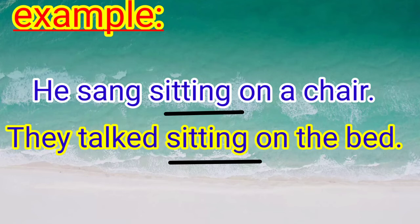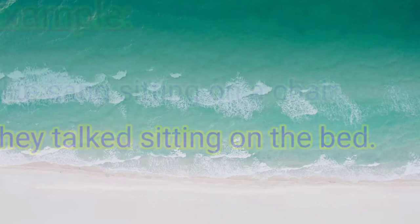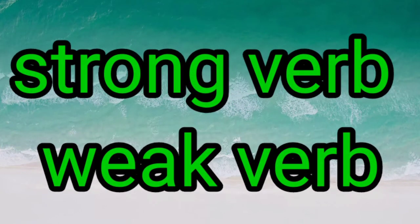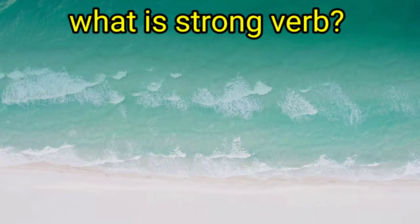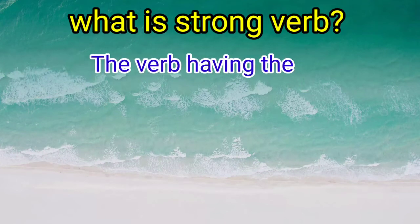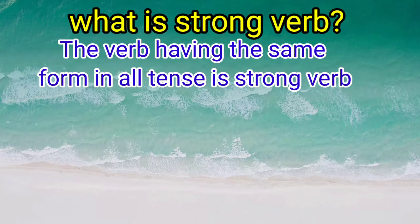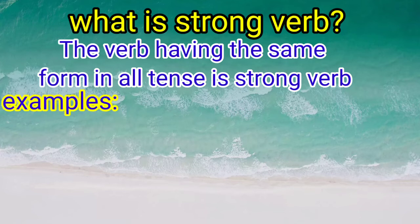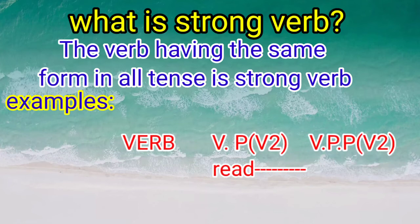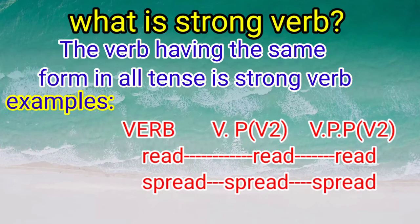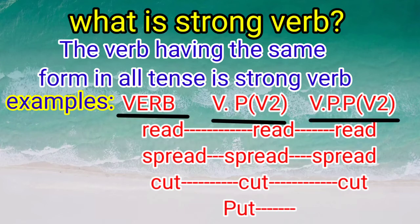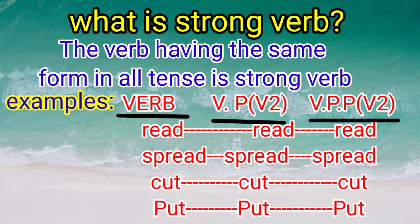Now we talk about another classification of verbs: strong verb and weak verb. A strong verb has the same form in all tenses. Examples: read–read–read, spread–spread–spread, caught–caught–caught, put–put–put.